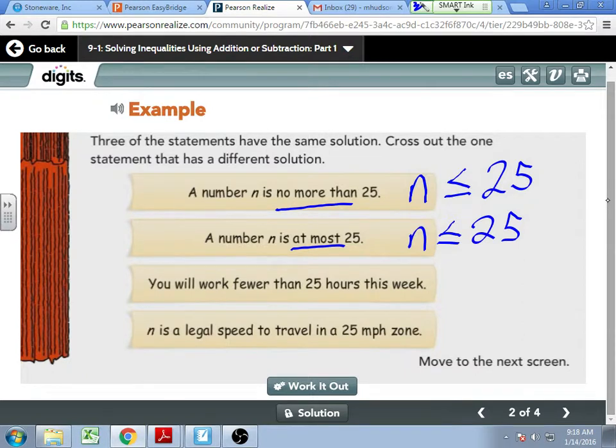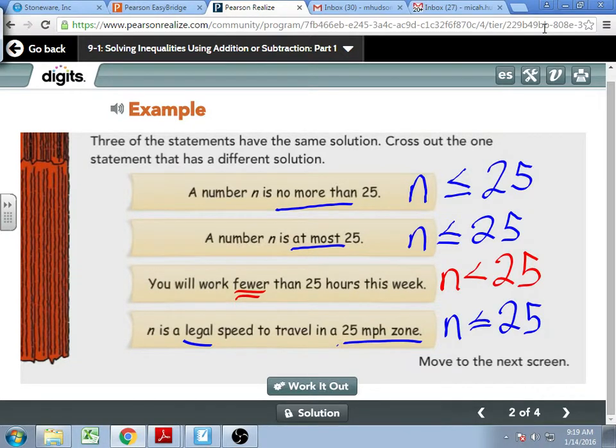Again, if you're confused, this is not on your notes. You're just watching right now, participating. You will work fewer than 25 hours this week. Luke? Yeah, you're going to work less than fewer. Could I work 25? No, because you're working less than that. So that's N is less than 25. That's our different one. And then if I look at the fourth one, N is a legal speed to travel in a 25-mile-an-hour zone. Can you go 25 in a 25-mile-an-hour zone? Yeah. And really, if you want to think about realistically, you can go a bit over, but not legally.